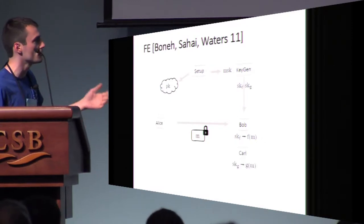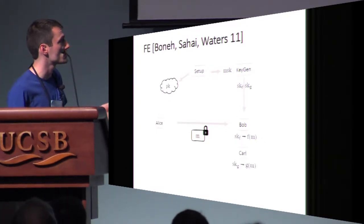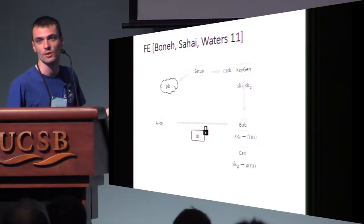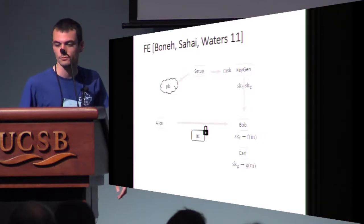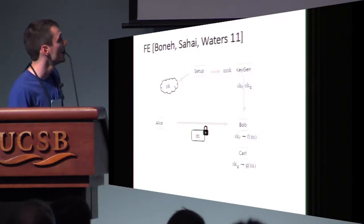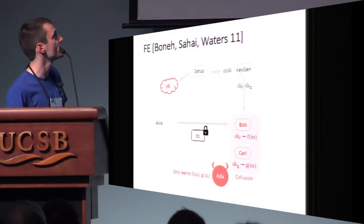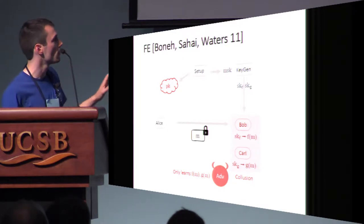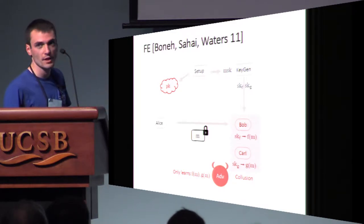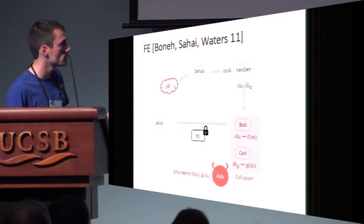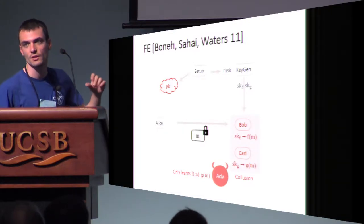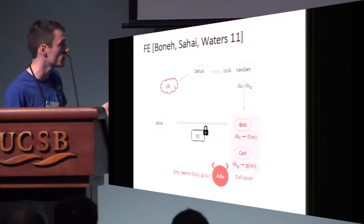You can think of another user, Carl, who wants to compute g of M — so he will get a different key, sk_g, that allows him to compute g of M. To be more precise, the security we want is resistance to a collusion of secret keys. So if an adversary gets the public key, but also different secret keys for different functions, the adversary should not learn anything more than what each individual key allows. In this case, we only learn f of M and g of M and nothing more.